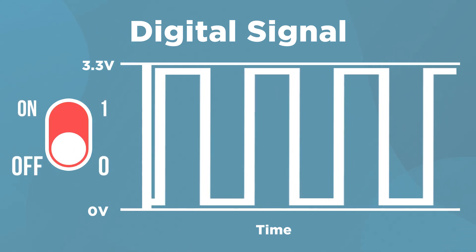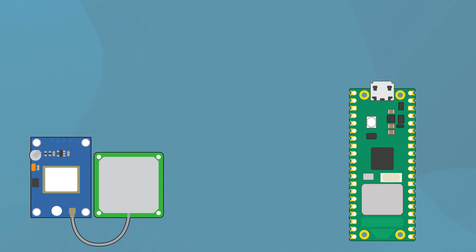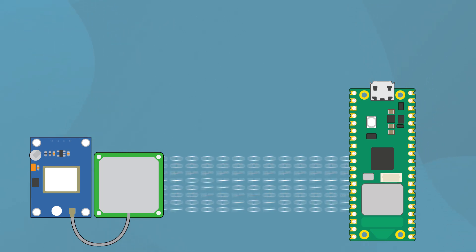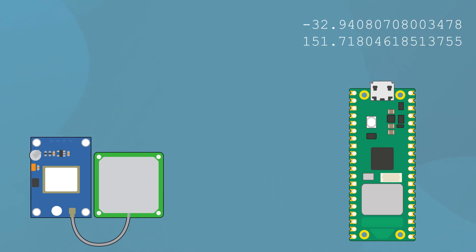Zero volts is a zero and 3.3 volts is a one. So the Pico can set those two voltages very quickly to send bits of ones and zeros to another device. We can take information like a GPS coordinate, turn it into ones and zeros, then send it over a wire to another device — our Pico in this case. That Pico can then turn those ones and zeros back into GPS coordinates. We're essentially turning data into voltages and then, on the other device, turning those voltages back into meaningful data.